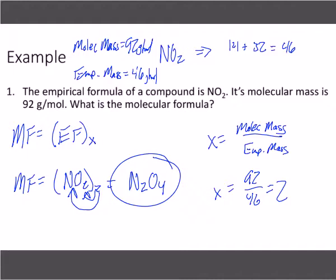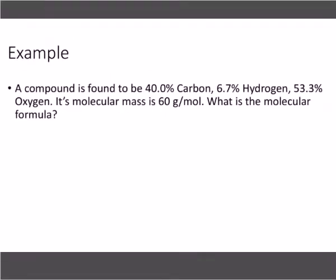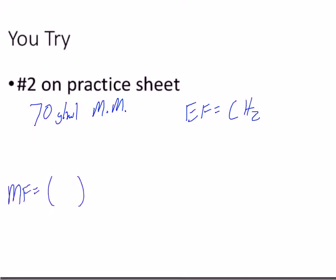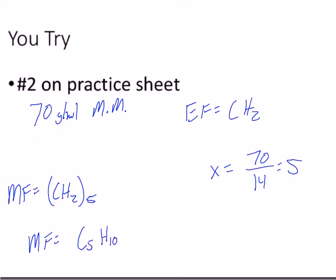Questions? How did we do? Number two. Go ahead and try that on your practice sheet. So you have 70 grams per mole for your molecular mass. Your empirical formula is what? CH2 is your formula. So EF equals CH2. And that's it. You're looking for the molecular formula. MF equals blank. So we need to find our X value here. So X is going to equal 70 divided by what's 12 and 2 is going to be about 14. When you divide 70 by 14, what do you get? You get 5. So it's going to be multiplied by 5. Your molecular formula is going to equal C5H10. That's what you should have got.